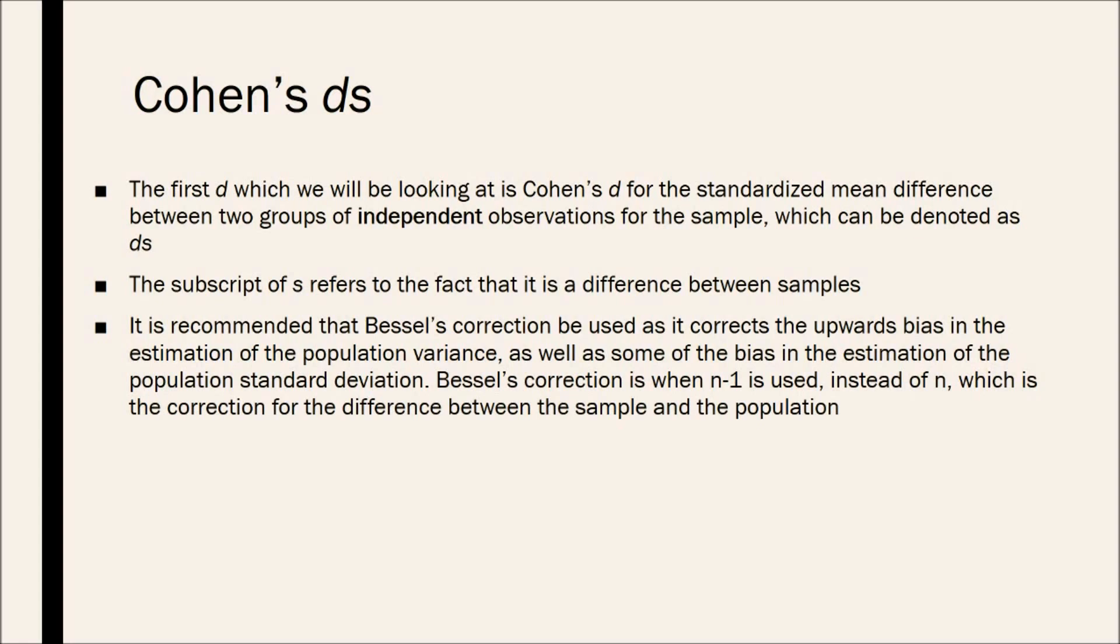It is recommended that Bessel's correction be used as it corrects upward bias in the estimation of the population variance, as well as some of the bias in the estimation of the population standard deviation. Bessel's correction is used when n minus one is used instead of just plain n, and of course n represents the sample size of the particular group, which is the correction for the difference between the sample and the population.